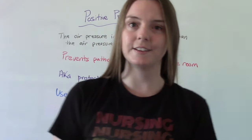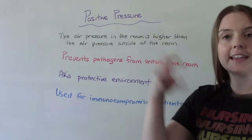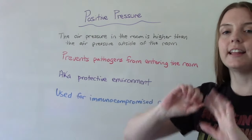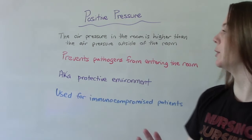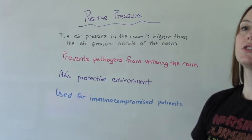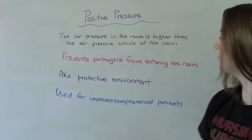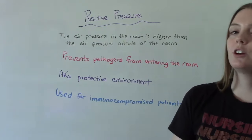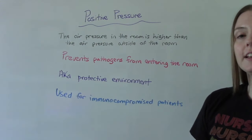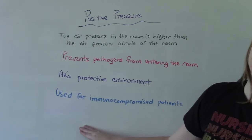In a positive pressure room, the air pressure on the inside of the room is higher than the air pressure on the outside of the room. This helps prevent pathogens from coming into the room. Sometimes this is also called a protective environment, and it is used for immunocompromised patients.